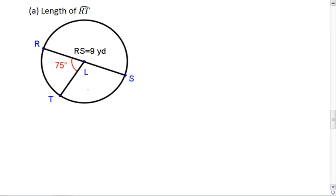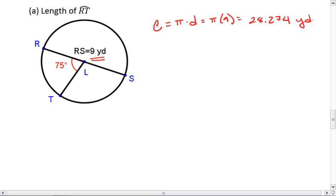Okay, for this first one, my diameter is 9 yards, which means circumference is pi times D, pi times 9, which I'm going to round to be 28.274 yards. Then I'm going to take 75 over 360. So the degrees over the total degrees equals the arc length. So the length of RT over the circumference, which is 28.274.